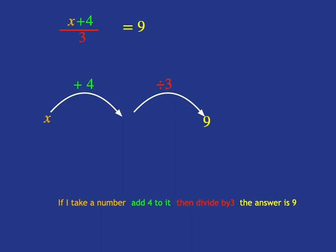I use my inverse operations. First, I need to multiply by 3, and that will give me that x plus 4 is now 27. Then I need to subtract 4, and I'll get my solution that x is equal to 23.